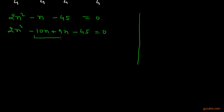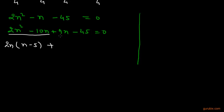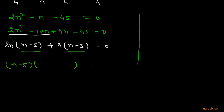The method of splitting the middle term has been explained in another video, so please refer to that. Taking 2n common from the first two terms leaves (n − 5), and taking 9 common from the last two terms also leaves (n − 5).